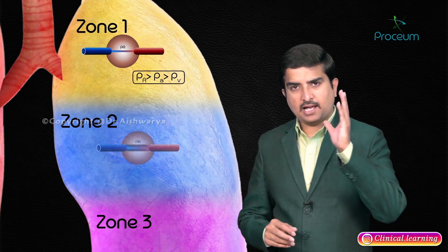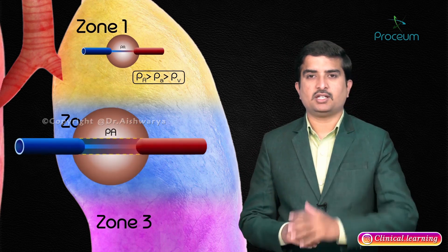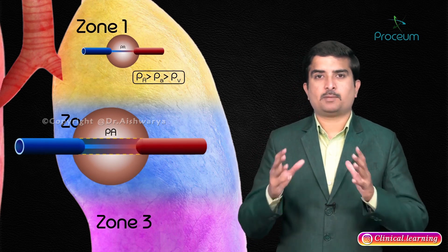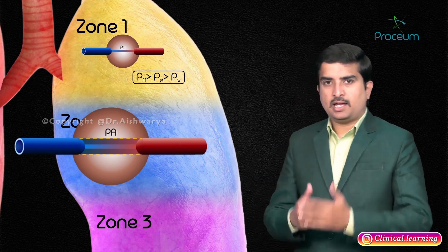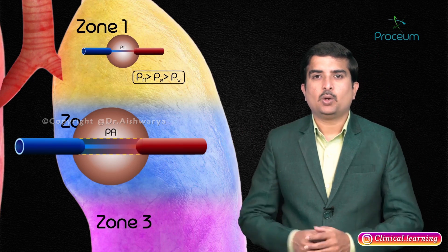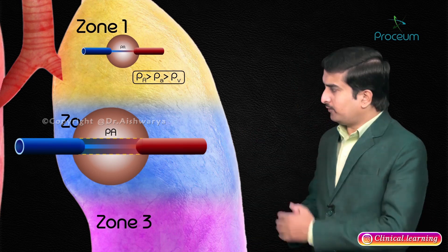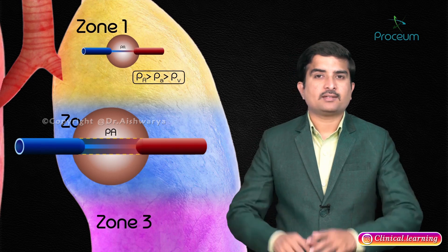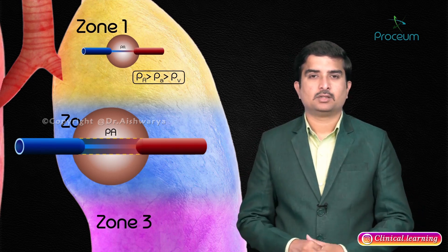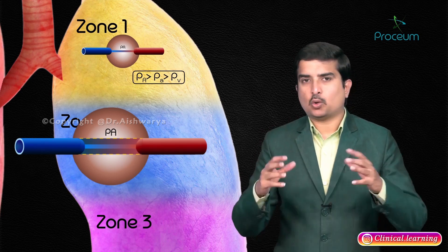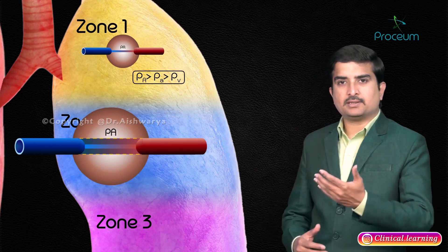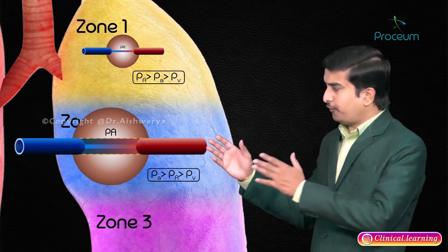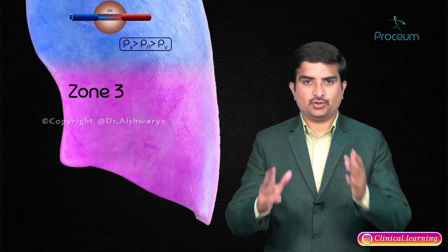Zone 2 is defined as those areas of the lung where pulmonary arterial pressure exceeds alveolar pressure, but the alveolar pressure exceeds the pulmonary venous pressure. This zone has intermittent blood flow during the cardiac cycle with no blood flow during diastole — meaning the majority of blood flow is seen only during systole. It is exhibited by the upper two-thirds of the lungs, where the alveolar pressure causes collapse of the pulmonary capillaries during diastole, while pulmonary capillary pressure during systole exceeds alveolar pressure, resulting in perfusion during systole.